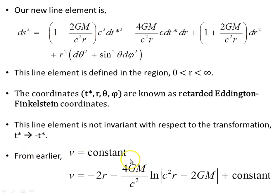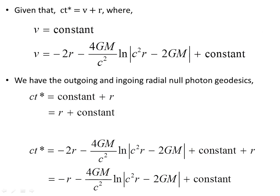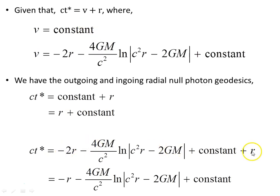From earlier, V equals a constant is one solution, and solving the other factor gives another. Given that ct* equals V plus r, we have the outgoing and ingoing radial null photon geodesics. The outgoing geodesic is ct* equals constant plus r — a straight line with slope 1. The ingoing geodesic substitutes the expression for V, giving ct* equals minus r minus the logarithmic term plus the constant.